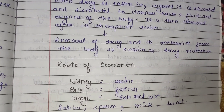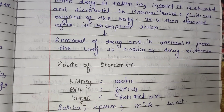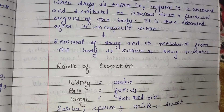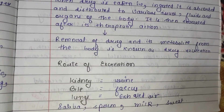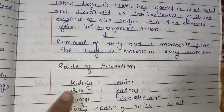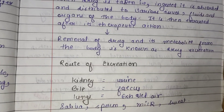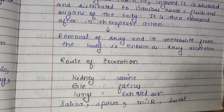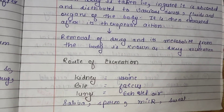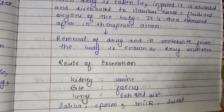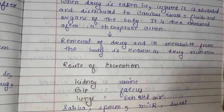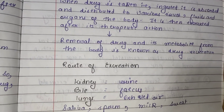Next, routes of excretion. Koon-koon se routes hote hain drug ke excretion ke — kaise remove hoti hai drug hamaari body se? First is kidney. Kidney se drug remove hoti hai urine ke form mein.